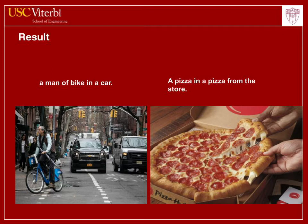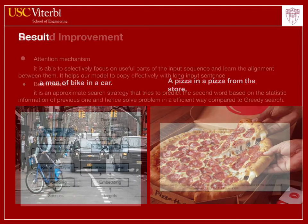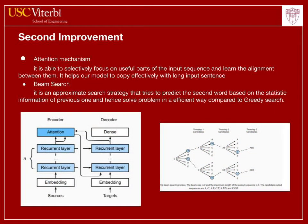So we wanted to find an effective way to capture the important information in the image without making our model too complex. This is our second improvement. Inspired by the paper 'Show, Attend and Tell,' we want to add an attention mechanism to our encoder network. The attention mechanism is able to selectively focus on useful parts of the input, and learn the alignment between them. It helps our model cope effectively with long input sequences and thus improves performance.